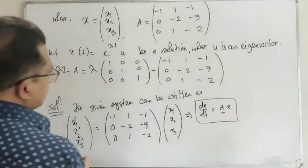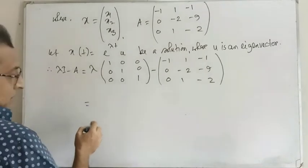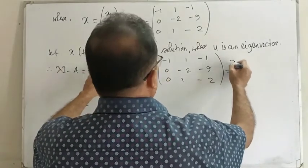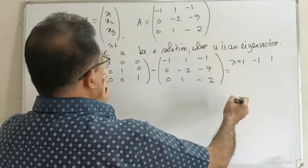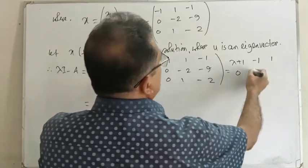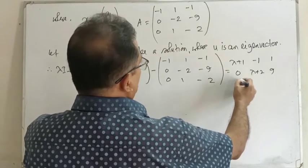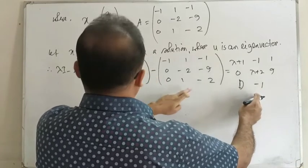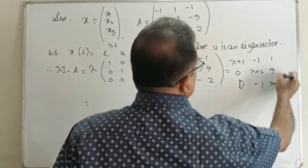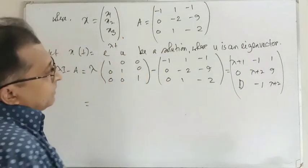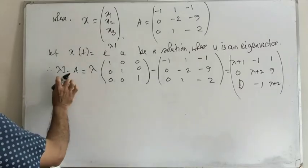So lambda I minus A will be: lambda plus 1, minus 1, 1 in the first row; 0, lambda plus 2, 9 in the second row; and 0, minus 1, lambda plus 2 in the third row. This is the characteristic matrix. The characteristic equation is det(lambda I minus A) equals 0.